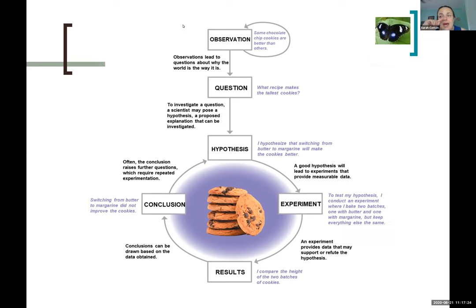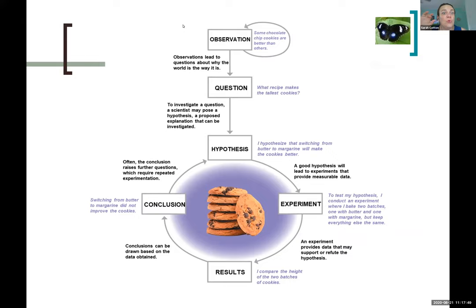The scientific method has a varying number of steps depending on which textbook you're reading. Sometimes observation and question are treated as separate entities: an observation is just noticing something, and then you start to have questions about it. The question in the scientific method is usually much more focused than just 'I wonder what makes cookies better.' Sometimes it's treated as one step, sometimes as two.